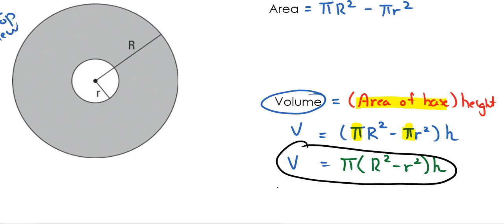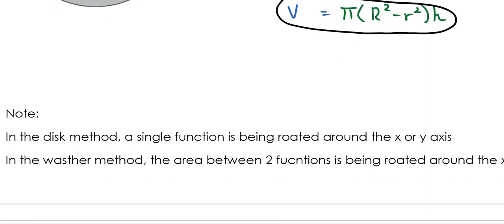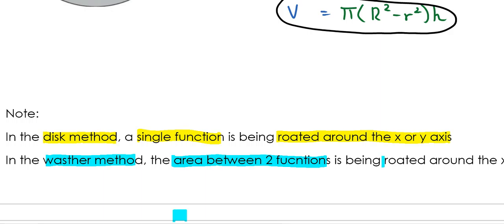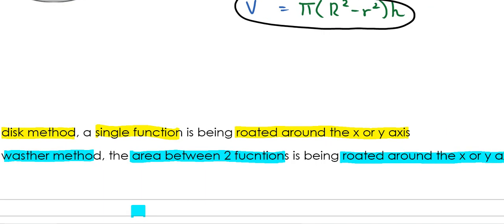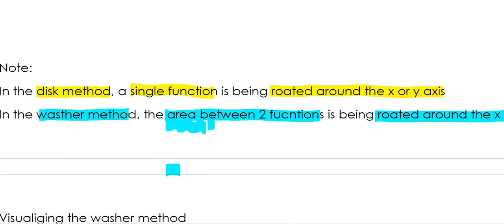For the disk method, you take a single function and rotate it around the x or y axis to find the volume of the shape generated. For the washer method, we're not rotating a single function but rotating the area between two functions around the x or y axis to form a solid. That's the key difference: the washer method rotates the area between two functions.